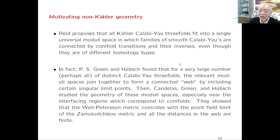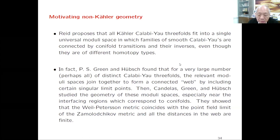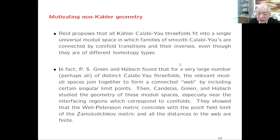Paul Green and Tristan Hübsch found that for a very large number of distinct Calabi-Yau manifolds coming from the poly construction, the relevant moduli spaces can join together to form a connected web by including certain singular limit spaces. These are exactly the conifold points, and moreover the metric on the moduli space is physical: it coincides with the point-field limit of the Zamolodchikov metric, and all distances in the web are finite. So within finite distance in physics you can reach this point.